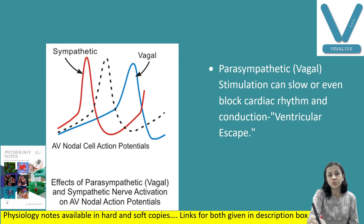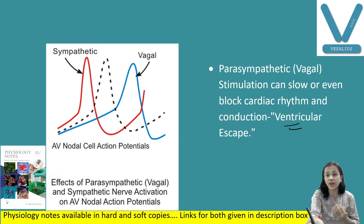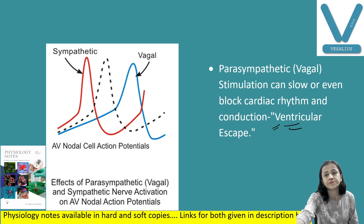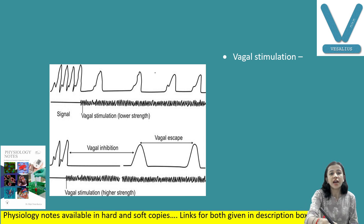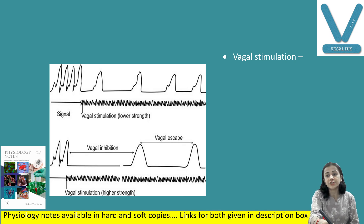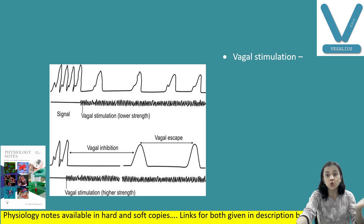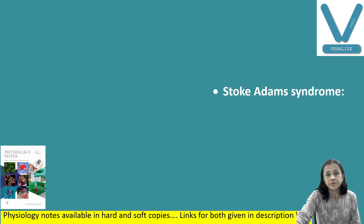Applied aspect: ventricular escape. When vagus nerve is stimulated mildly or moderately, it decreases heart rate. But with strong stimulation of the vagus nerve, large amounts of acetylcholine are released and the heart stops beating — this is ventricular escape. Strong vagal stimulation can slow or even completely block cardiac rhythm and conduction, stopping rhythmic excitation by the sinus node or blocking transmission of impulses through the AV node.